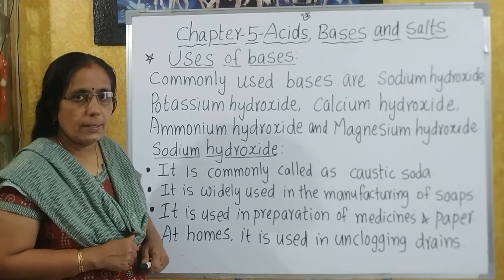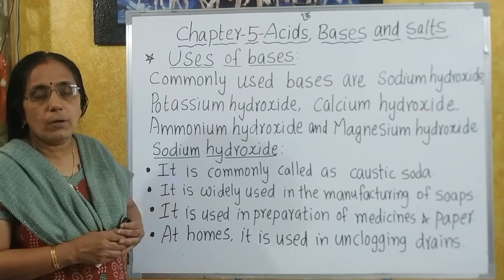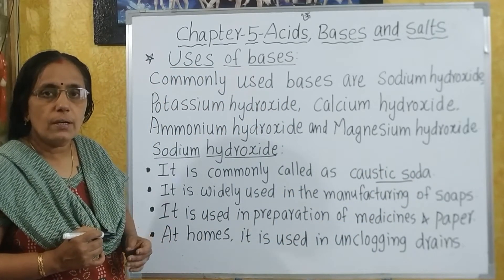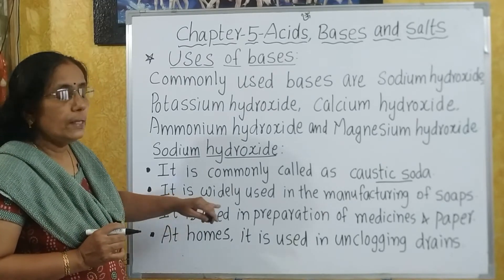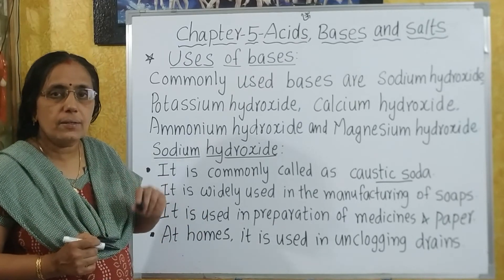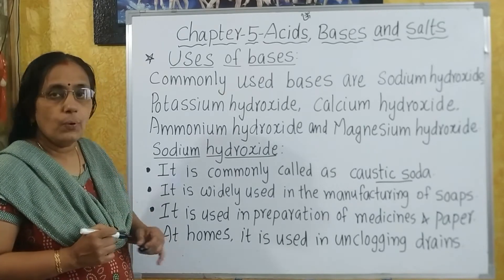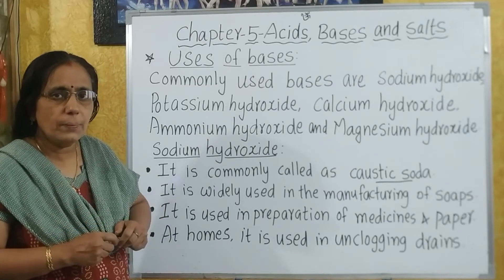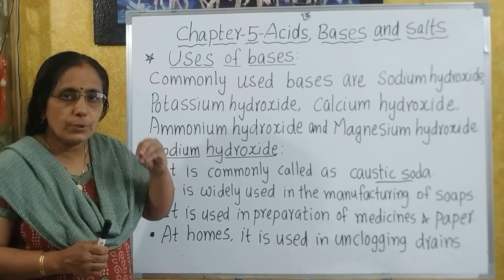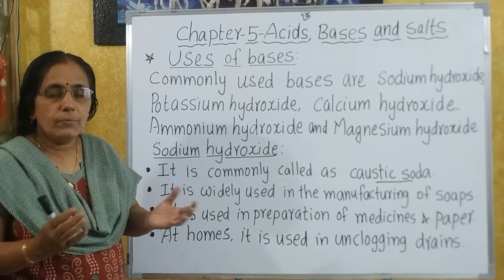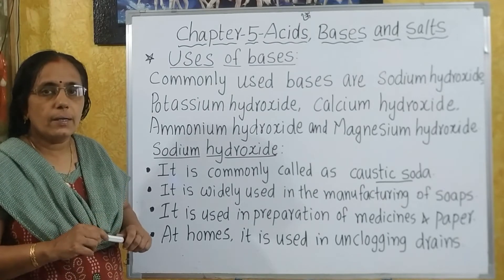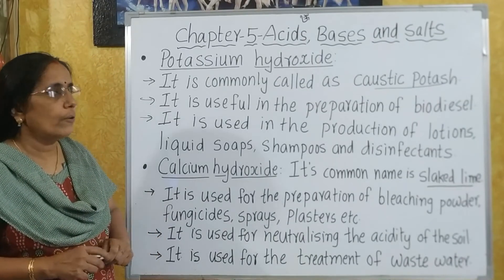First, we will see sodium hydroxide. Sodium hydroxide is commonly called caustic soda. It is widely used in the manufacturing of soaps. It is also used in the preparation of medicines and paper. At home, it is used in unclogging the drains — if the drain gets blocked, putting sodium hydroxide removes the blockage and opens the drain.